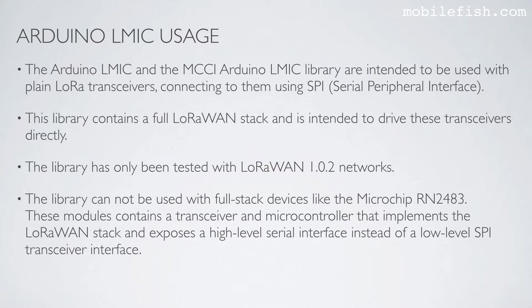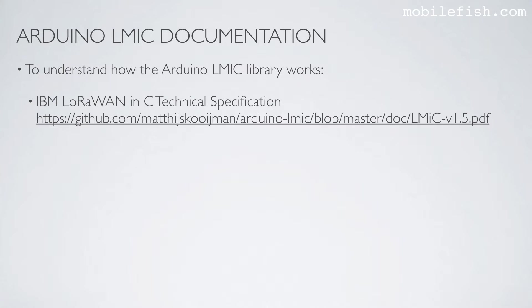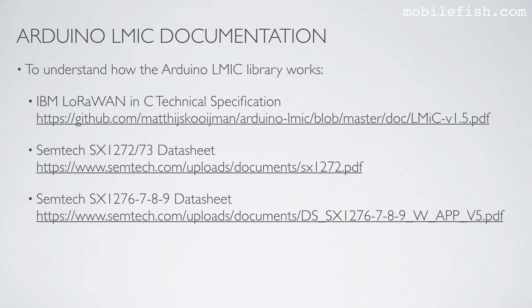The library cannot be used with full-stack devices like the Microchip RN2483. These modules contain a transceiver and microcontroller that implements the LoRaWAN stack and exposes a high-level serial interface instead of a low-level SPI transceiver interface. To understand how the Arduino LMIC library works, read the IBM LoRaWAN in C technical specification, the Semtech SX1272/73 datasheet, and the Semtech SX1276/78/9 datasheet.